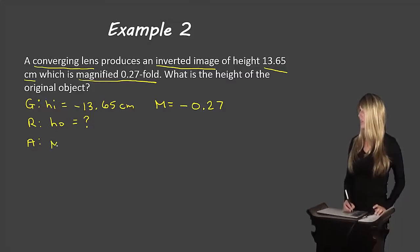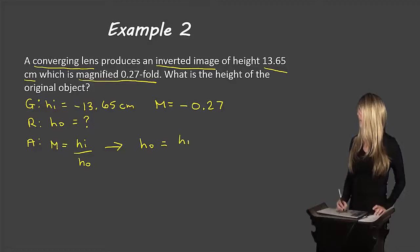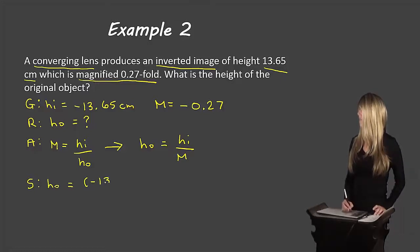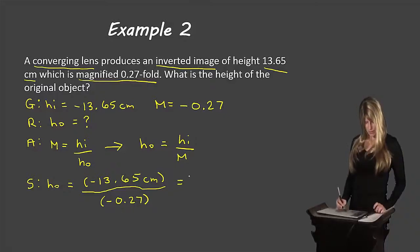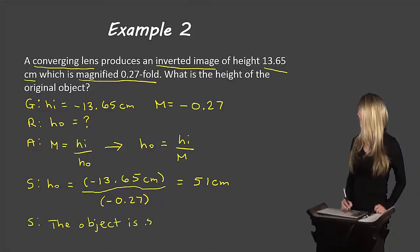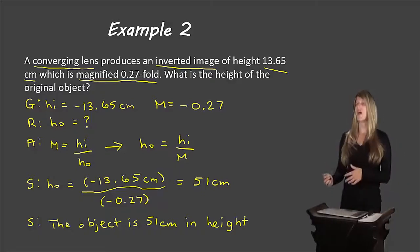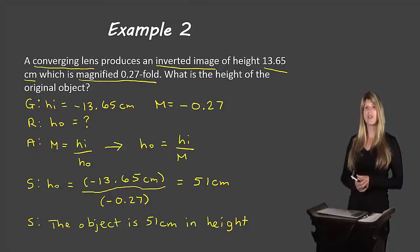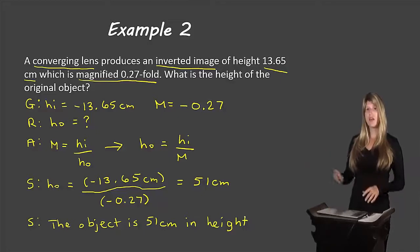That part of the equation is: magnification equals HI over HO. Rearranging, HO equals HI over M. Substituting: HO equals negative 13.65 centimetres over negative 0.27, which gives us 51 centimetres. The object is 51 centimetres in height. Checking our signs: HO is a positive number, and HO must always be positive, so we know we've done something correctly here.